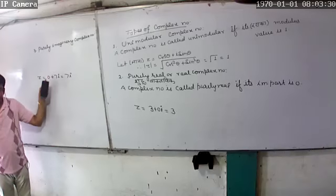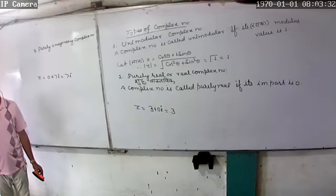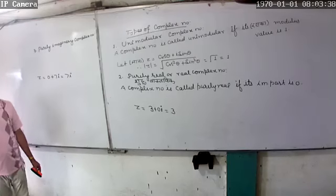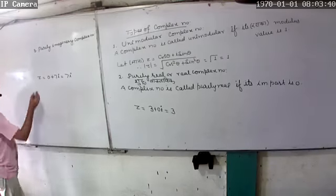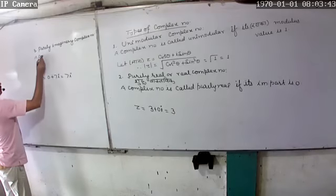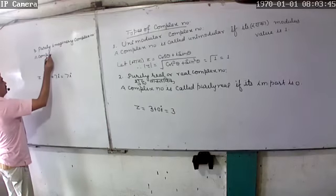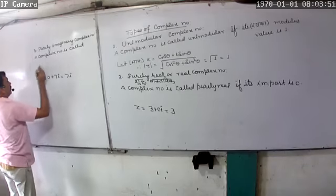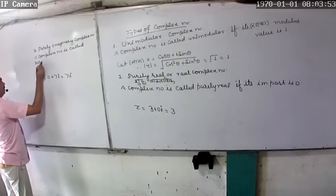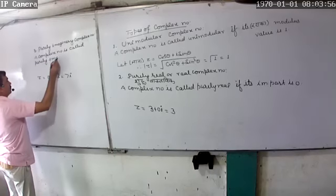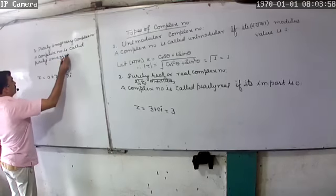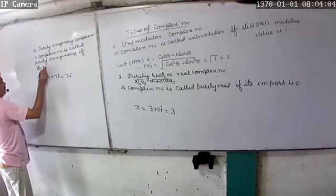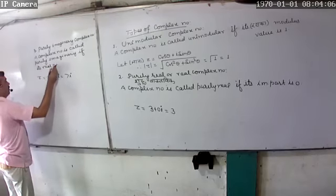Paribastha is the definition. What is Paribastha? A complex form is called purely imaginary when its real part is zero. Okay? That's what Paribastha is telling.